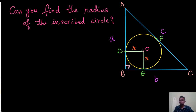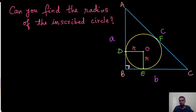One thing to remember that we've learned about tangents: tangents are always perpendicular to the radius. So AB is a tangent here and OD is a radius, which means OD is perpendicular to AB — there is a right angle here. In the same way, this radius OE is perpendicular to side BC. Tangents and radii are always perpendicular at the point of contact.